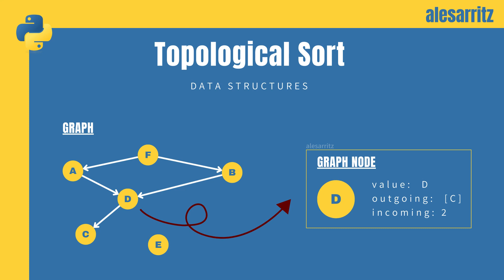Now, let's take a look at the data structures we'll use during the development of the algorithm. Obviously, we'll have a graph. As you can see, each graph node has a value, a list of outgoing edges, and a counter of incoming edges.